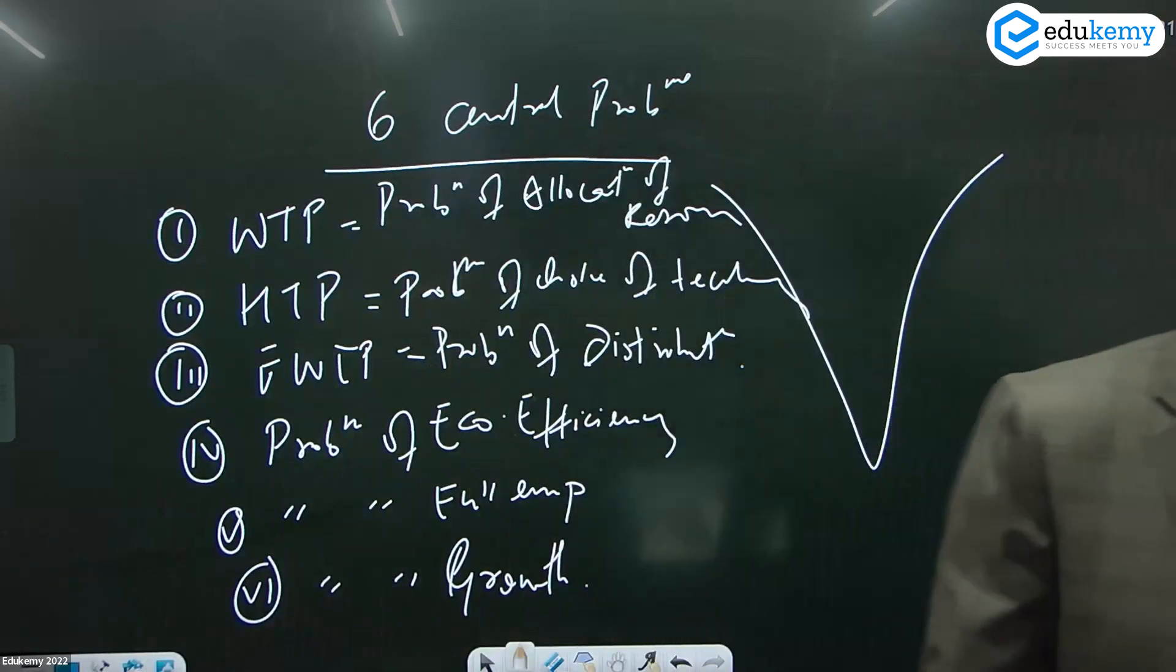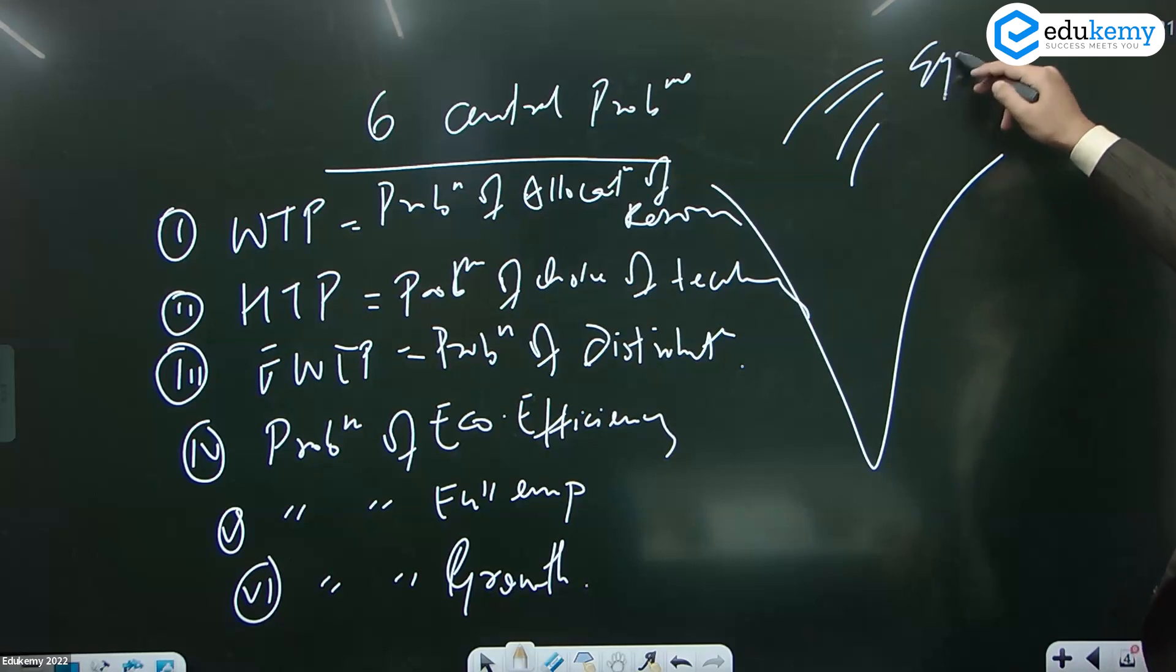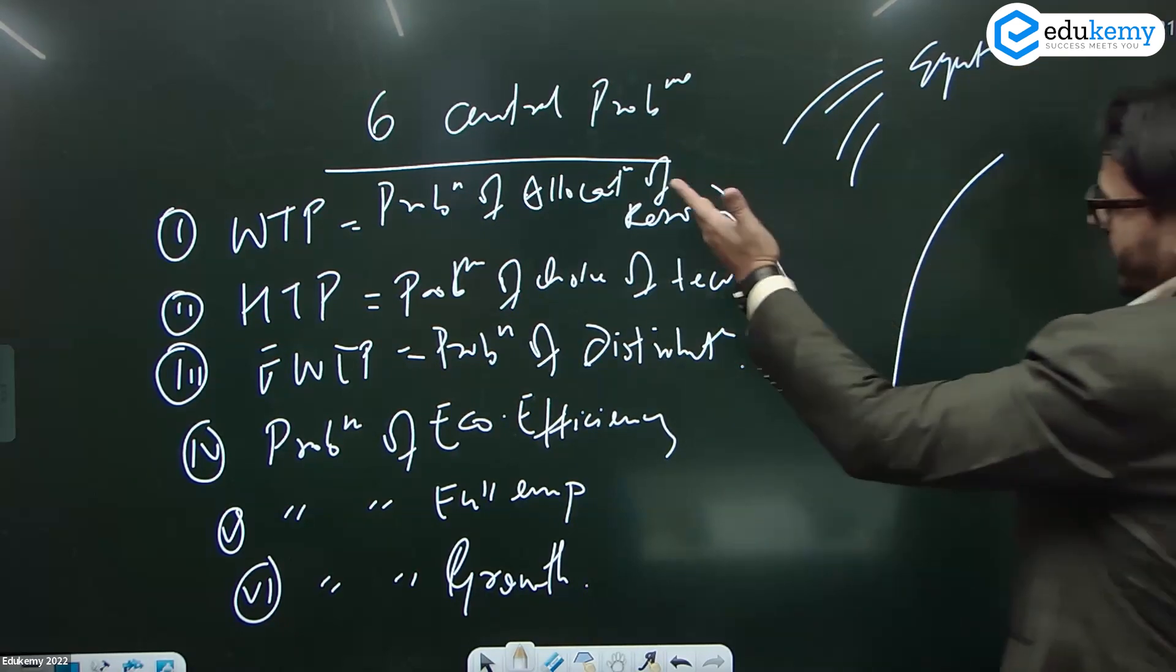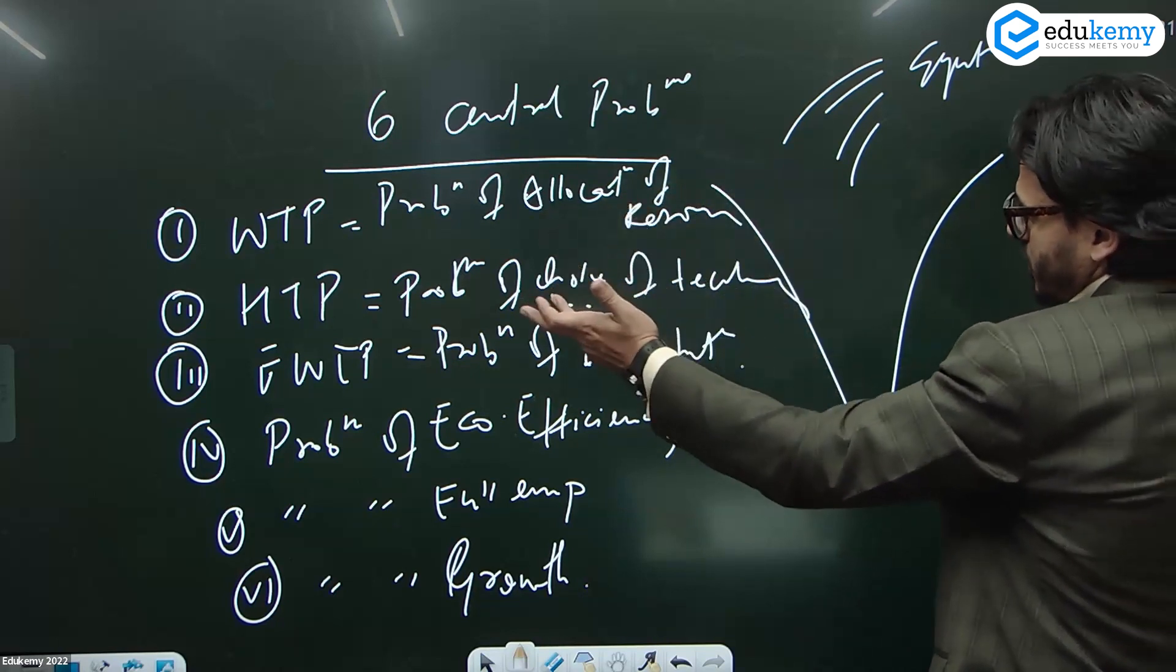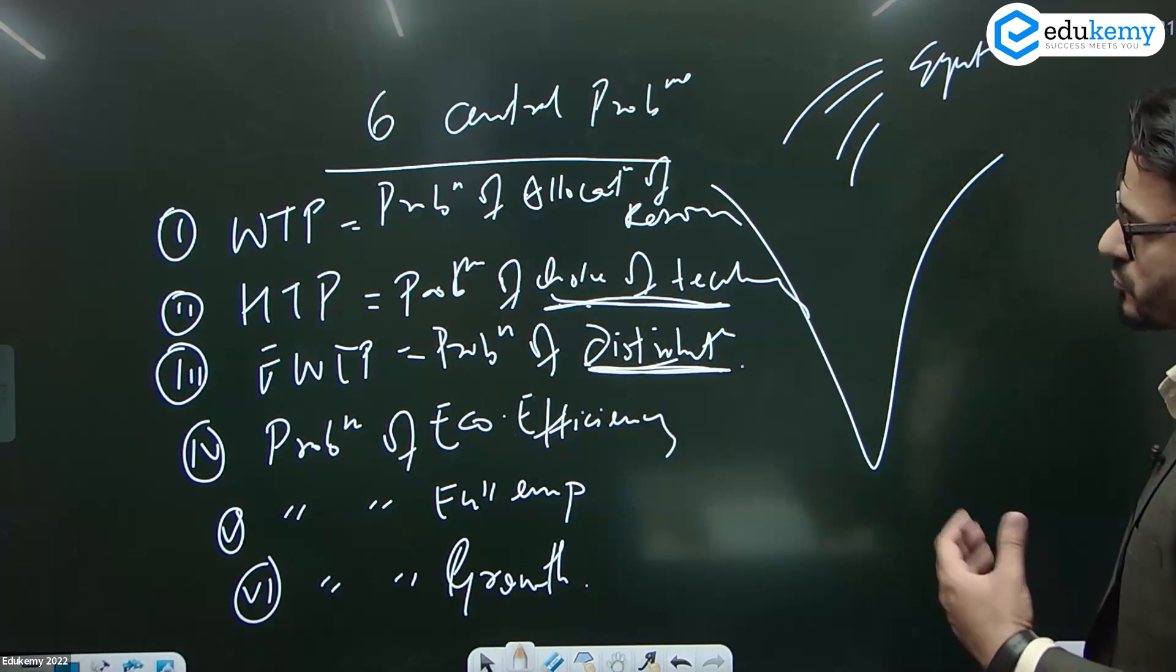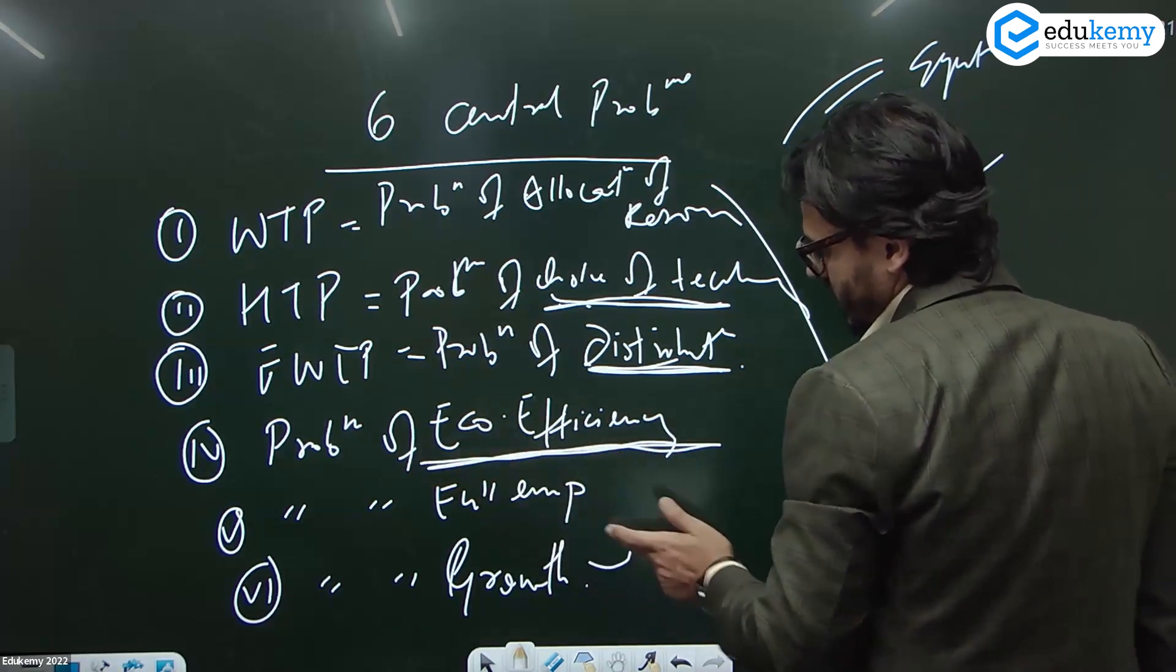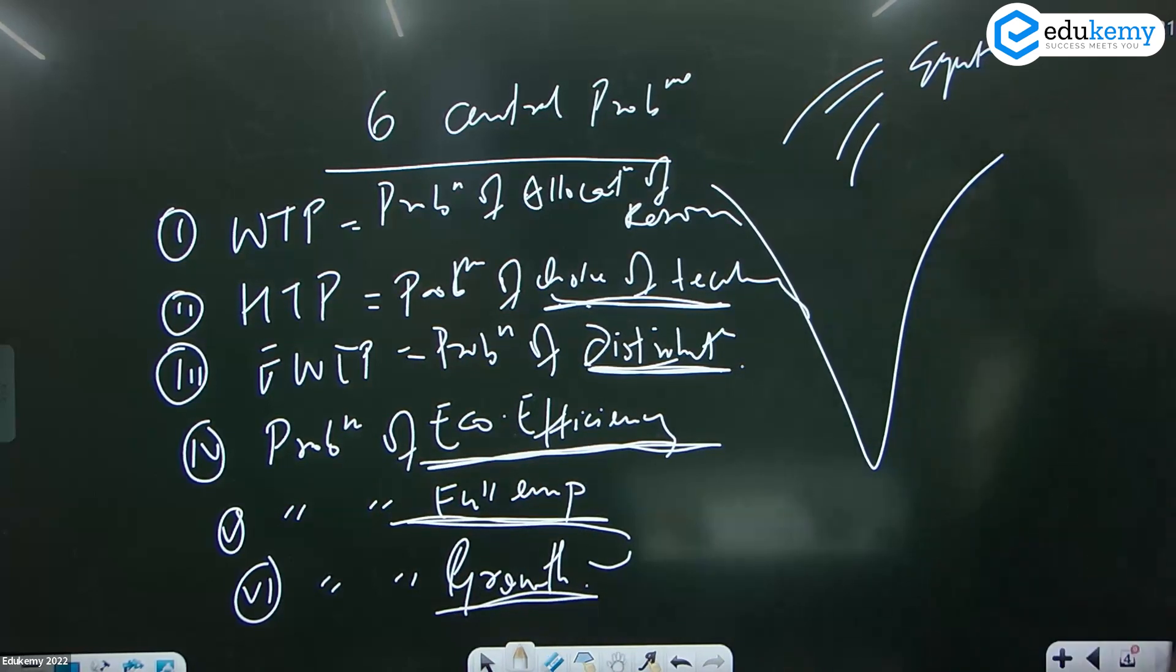So whatever economic system you have, that system has to find an answer to these six problems: how would you allocate the resources, what technique would you use, for whom are you producing (that means income distribution), how would you ensure economic efficiency, how would you ensure full employment, and how would you ensure growth. These are the six central problems.